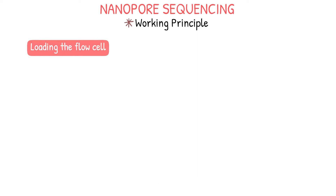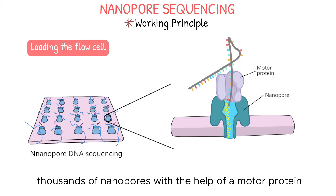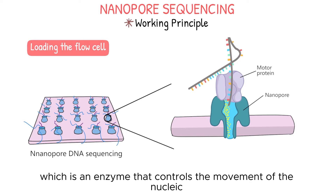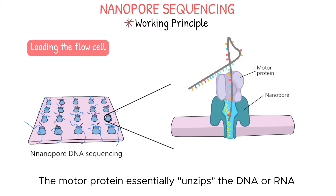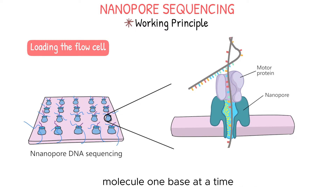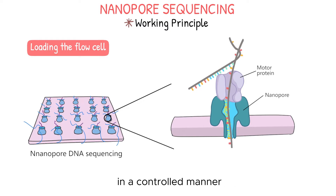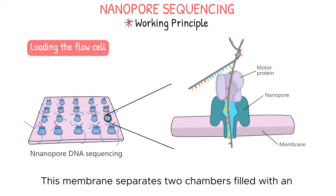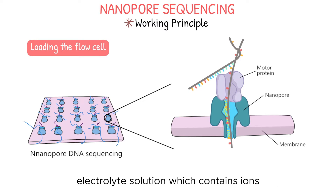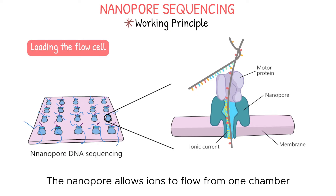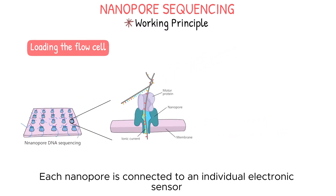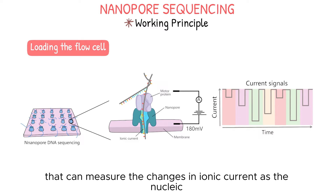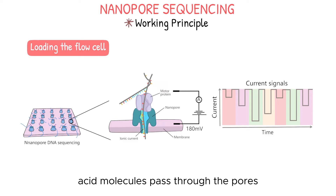Loading the flow cell. The prepared library is then loaded onto a flow cell containing thousands of nanopores. With the help of a motor protein, which is an enzyme that controls the movement of the nucleic acid molecule through the pore, the motor protein essentially unzips the DNA or RNA molecule one base at a time, allowing it to pass through the nanopore in a controlled manner. A nanopore is a tiny protein channel embedded in an electrically resistant membrane. This membrane separates two chambers filled with an electrolyte solution containing ions. The nanopore allows ions to flow from one chamber to the other, creating an ionic current. Each nanopore is connected to an individual electronic sensor that can measure the changes in ionic current as the nucleic acid molecules pass through the pores.